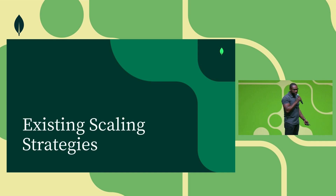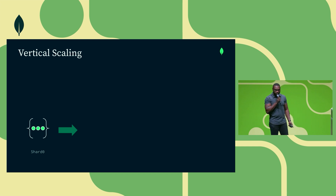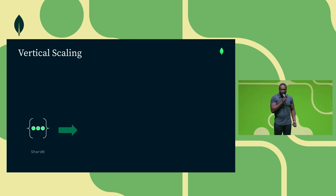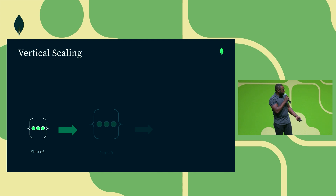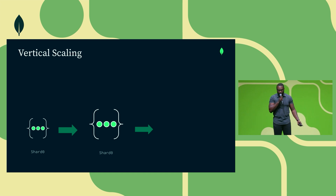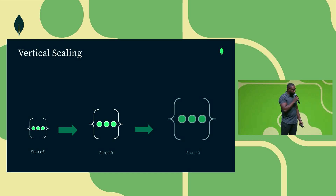Let's talk about existing scaling strategies. The first is vertical scaling — when any of those four things need to scale, you just get a bigger machine. For example, if a shard has 8 gigs of RAM and that's not enough, you get a machine with 16 gigs. If that's not enough, you get an even bigger machine. As you grow, you just vertically scale, and you don't have to change anything in your application.